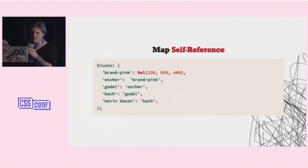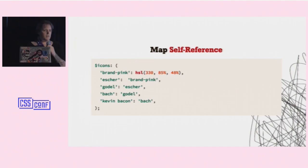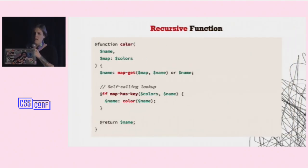So that's a problem, if I'm trying to represent my colors in a map, what am I going to do about that? So I have my workaround, you can decide whether it works for you. I wanted to be able to do self-reference. So here I've got brand pink, which is pink again, so that's good. And then Escher is referencing brand pink, Goodall, Escher, Bach, Goodall, and Kevin Bacon, finally. So at the end of this, I want Kevin Bacon to give me the brand pink. So I need to do self-reference, so I made a color function that looks up, grabs a color if it's there, and then it checks again to see if that color is still a key in the map, and if it is, it goes and calls itself. So I've got this self-referential recursive function that will keep looking at the map until it gets to the end. So that's a good start.